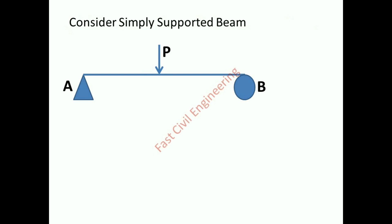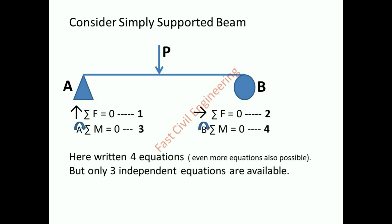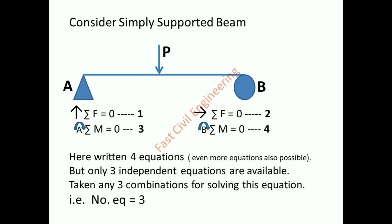Consider a simply supported beam: one side pin support and the other side roller support. Summation of vertical forces equals zero, summation of horizontal forces equals zero, summation of moment about A equals zero, summation of moment about B equals zero. Here four equations are written, but only three independent equations are available. Any three combinations can be taken for solving — that is, number of equations equals three.